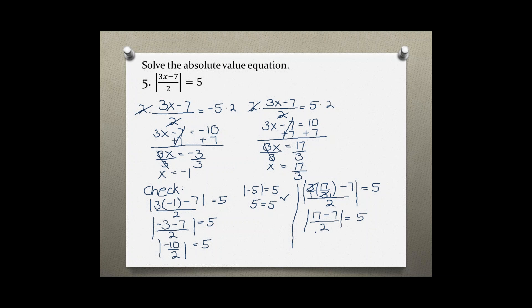17 minus 7 is 10. 10 divided by 2 is 5, and the absolute value of 5 is positive 5, which is equal to 5.